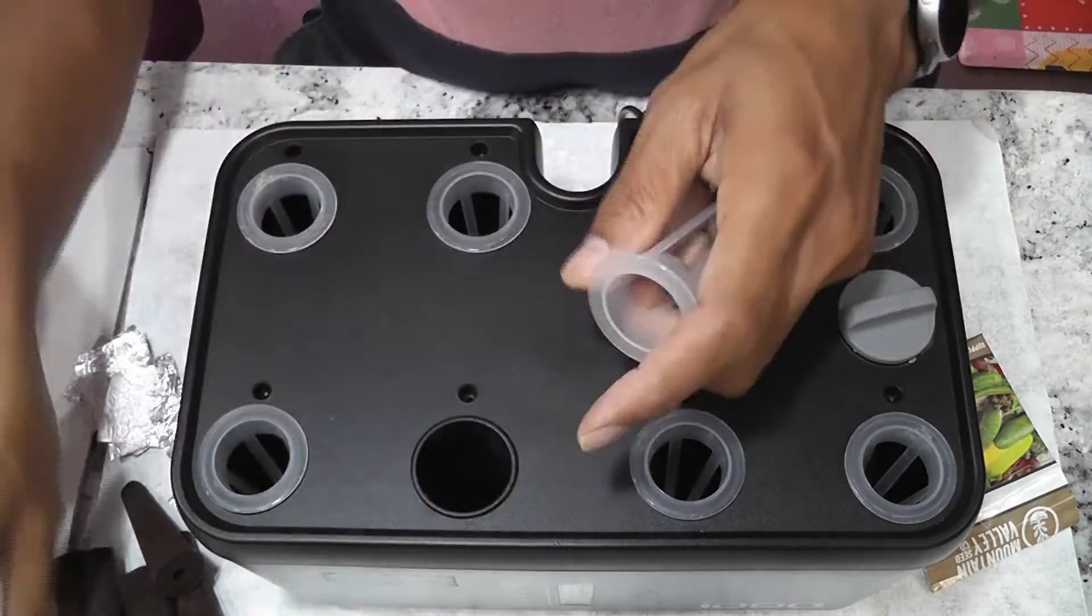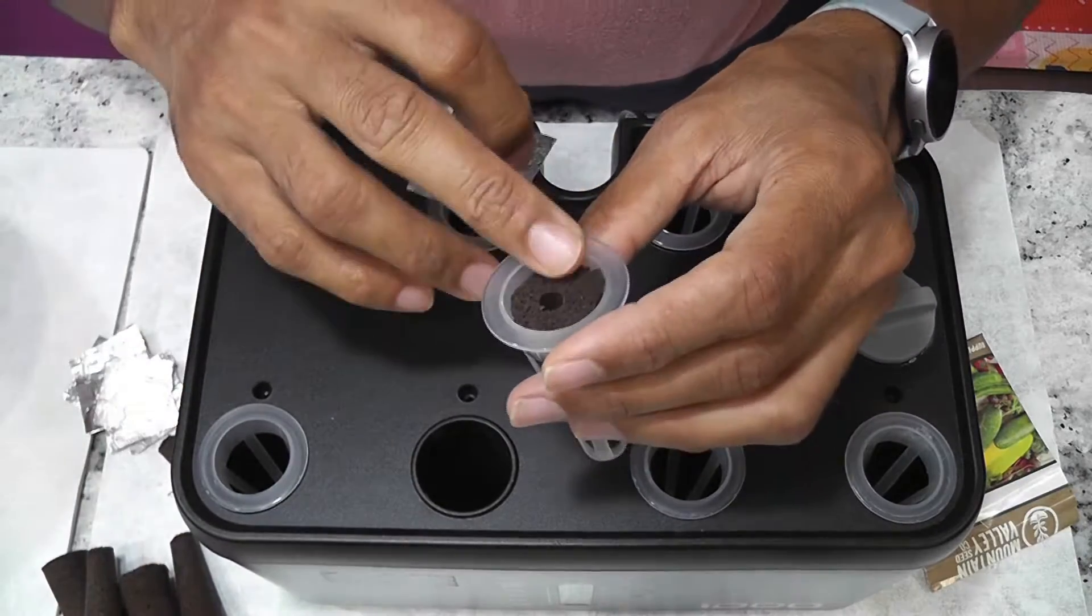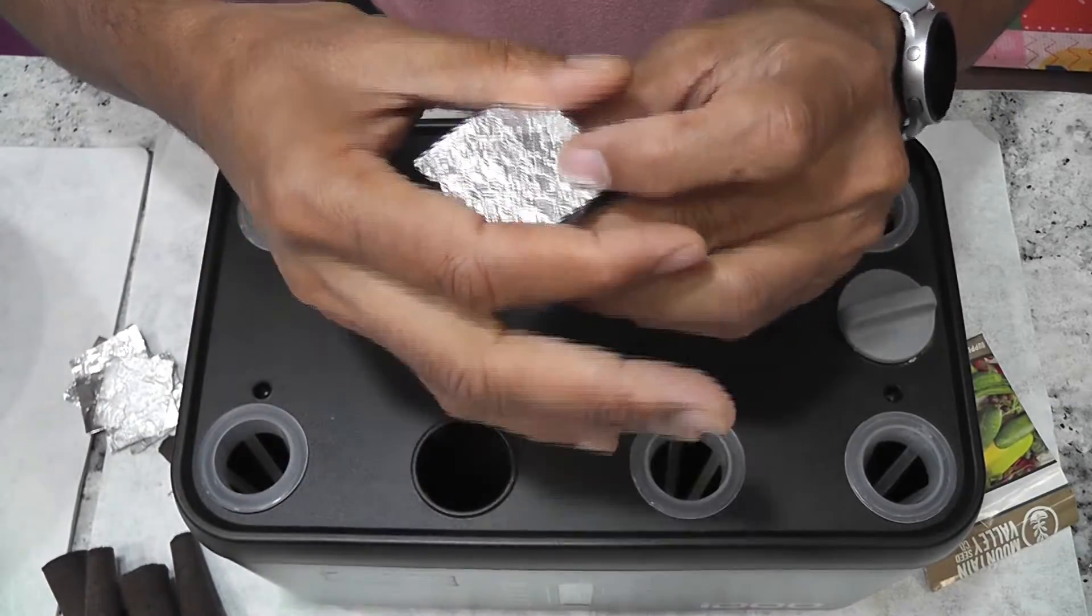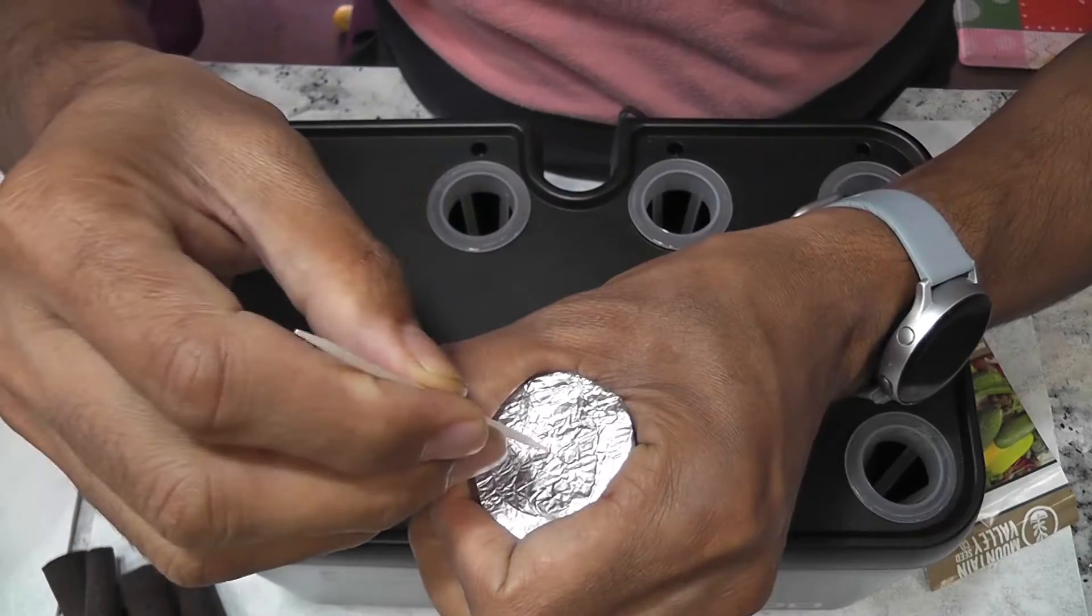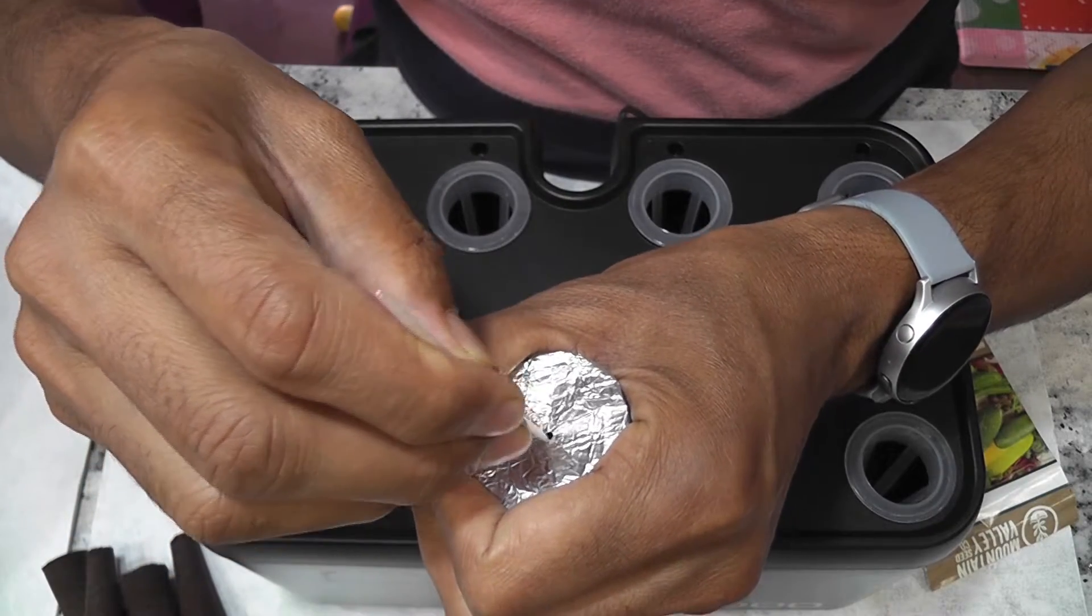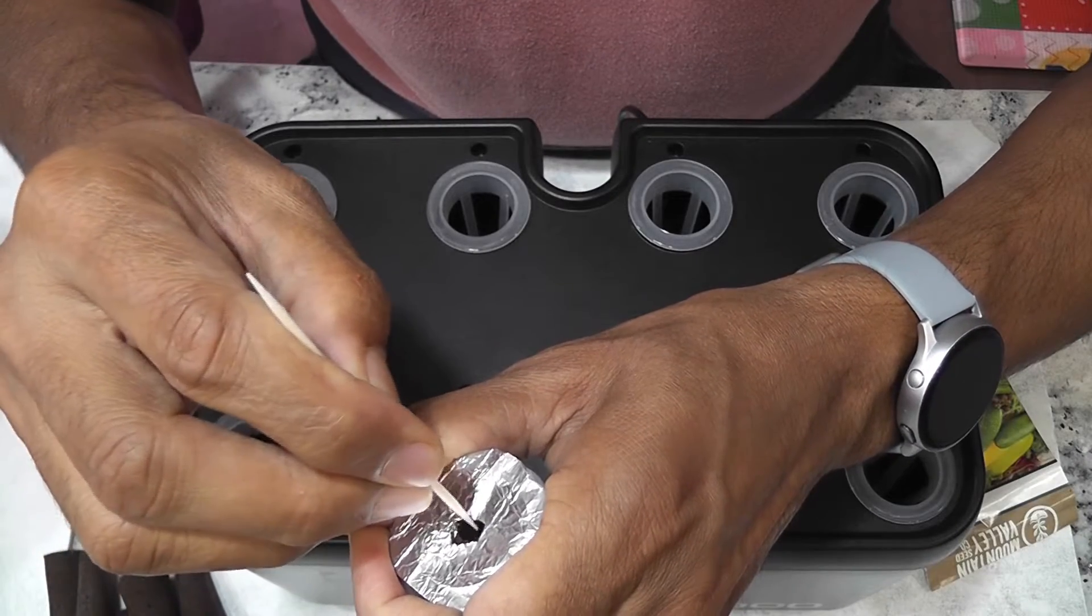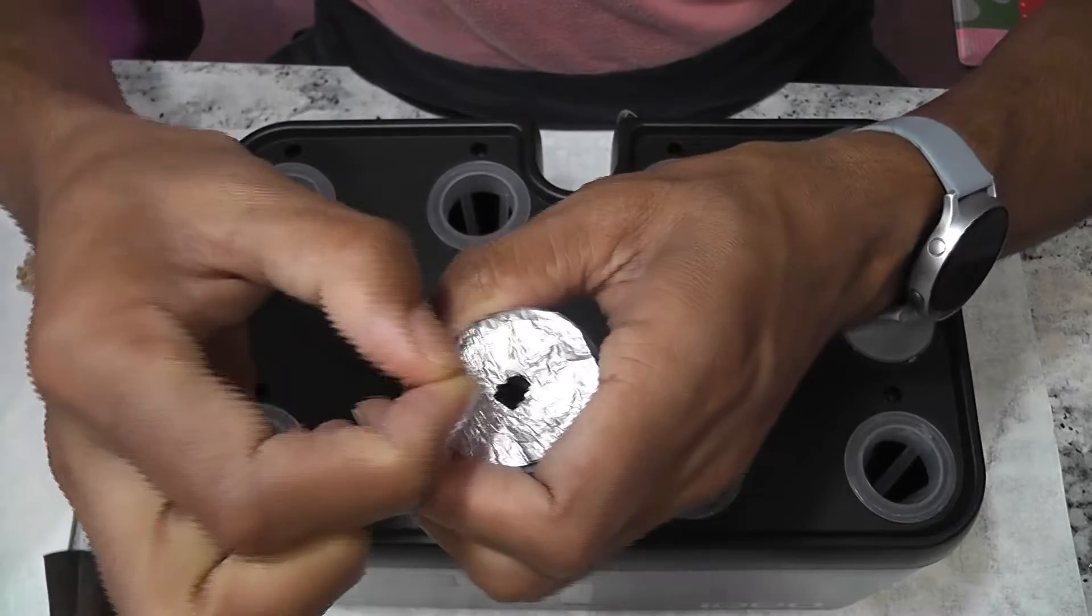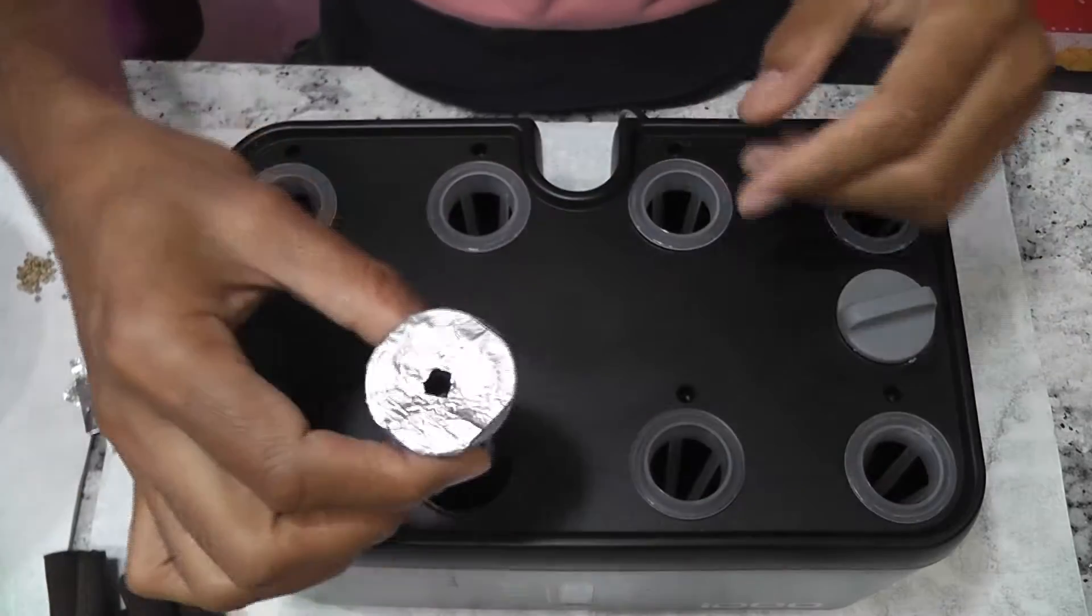First, I am going to make the pod. I am using some off-brand sponges. I don't have any stickers so I am using some aluminum foil as sticker. Then make a hole in the center. Just make it big enough to drop the seeds. This is good. Now I am dropping two seeds into this pod. That's it. The pod is ready.